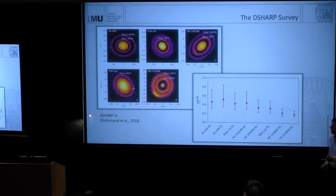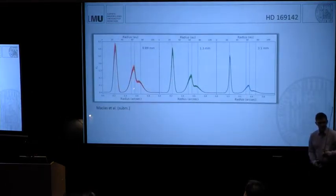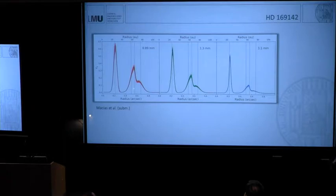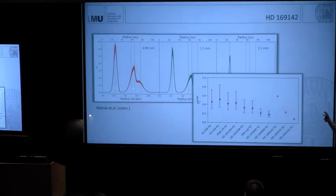Last week, there was the conference in Victoria. Enrique Machias showed results from another disk. It's another HD phone number. Also here, the optical depth that he gets out of his observations, they are on the same range. I just plot this now. I omitted the error bars here because I'm not sure about them. And they're all in that range. So something is going on there.